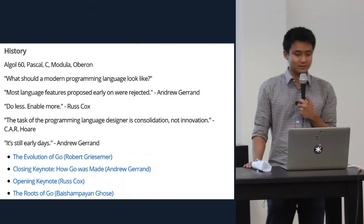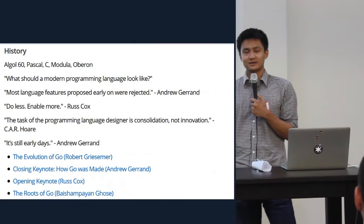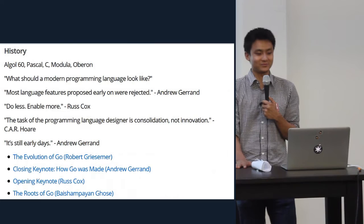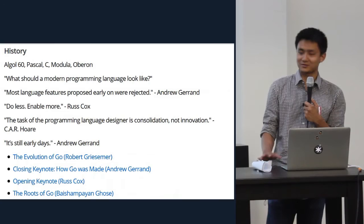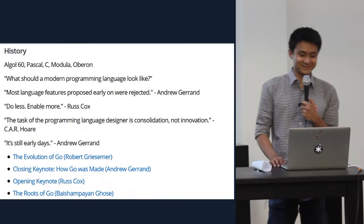Go began with the question asked among Ken Thompson, Rob Pike, and Robert Griesemer: what should a modern programming language look like? Someone made the joke that they asked this question while waiting for some C++ code to compile.